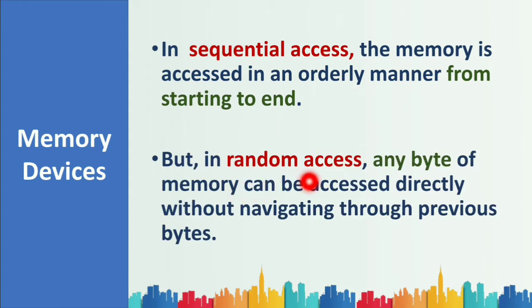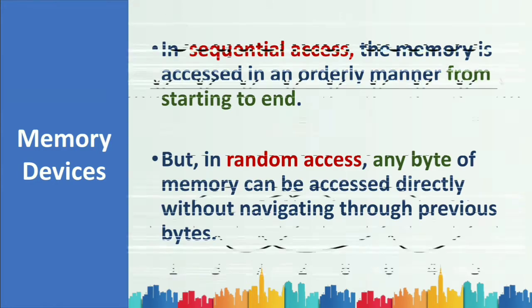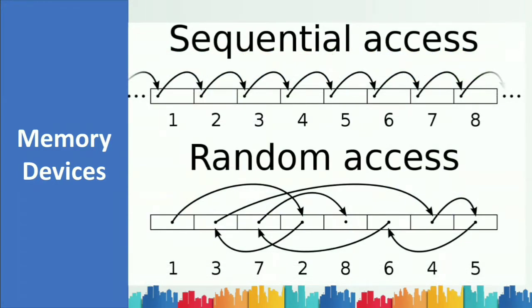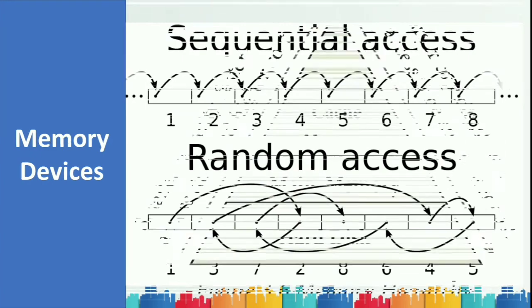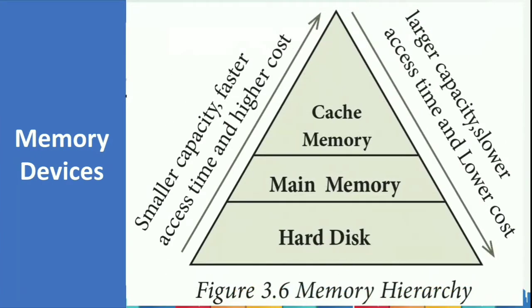In random access, any byte of memory can be accessed directly without navigating through previous bytes. For example, with eight memory boxes, filling all boxes one after the other in order is sequential access. In random access, wherever we find an empty box we can fill it — no order is required.